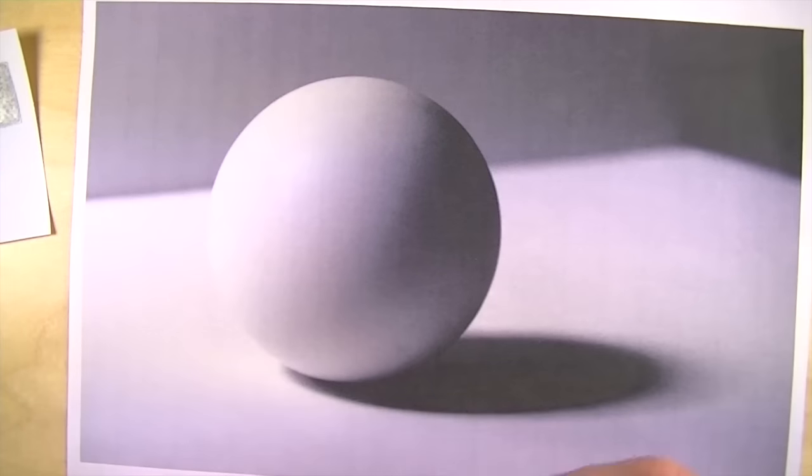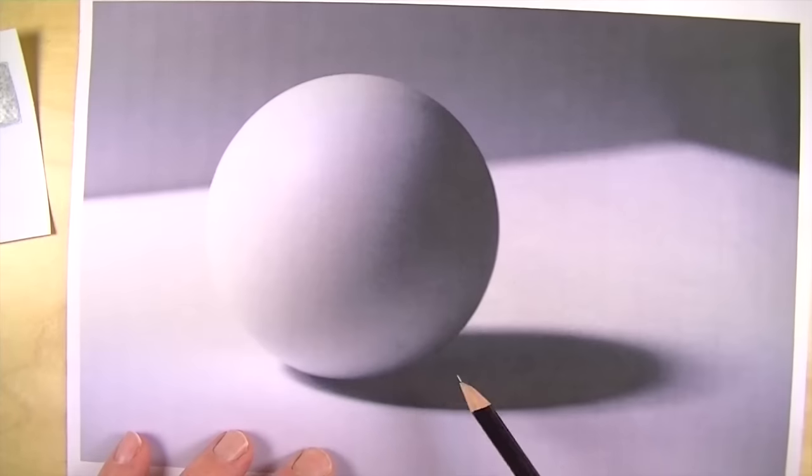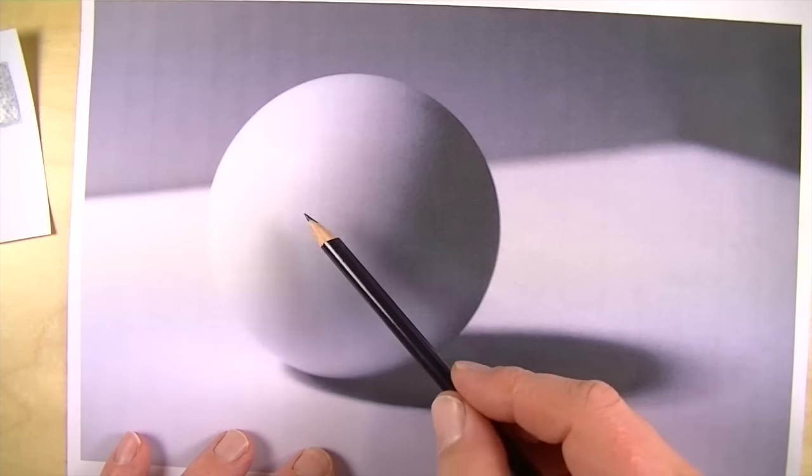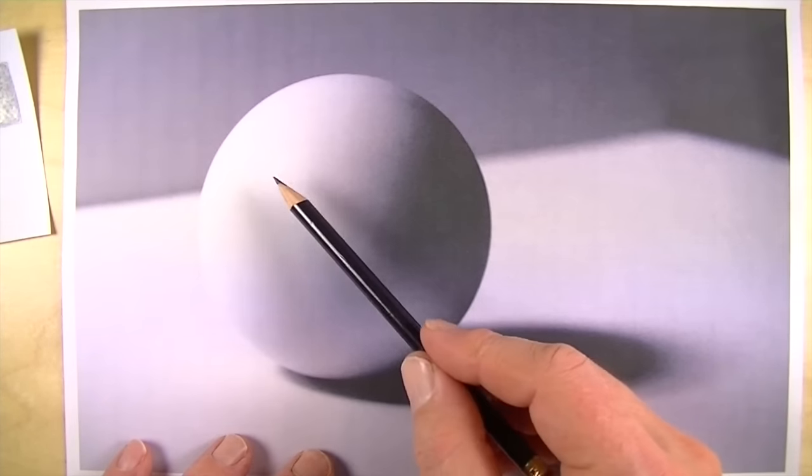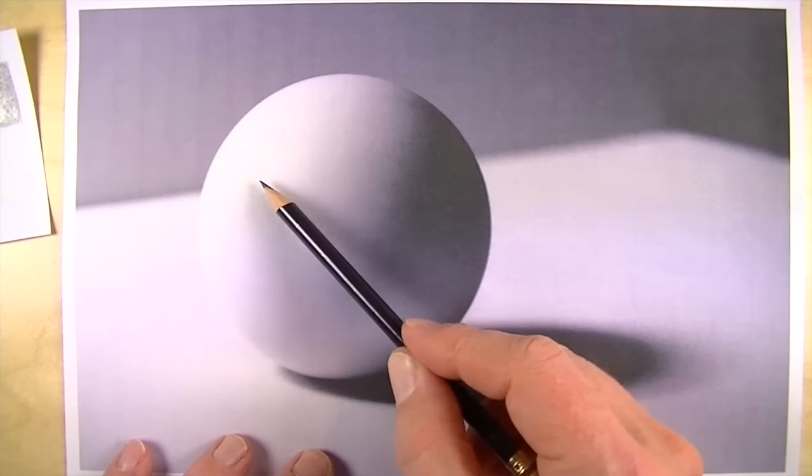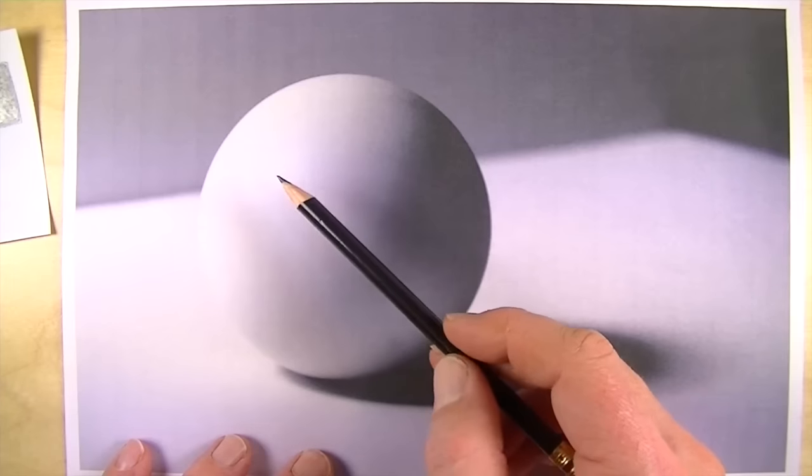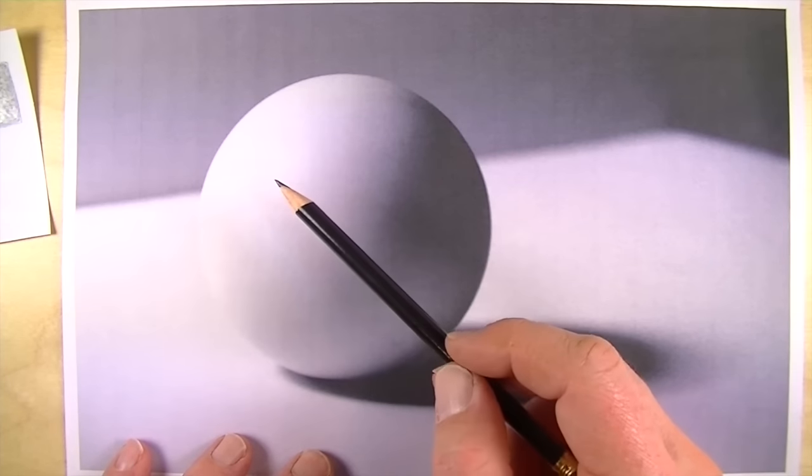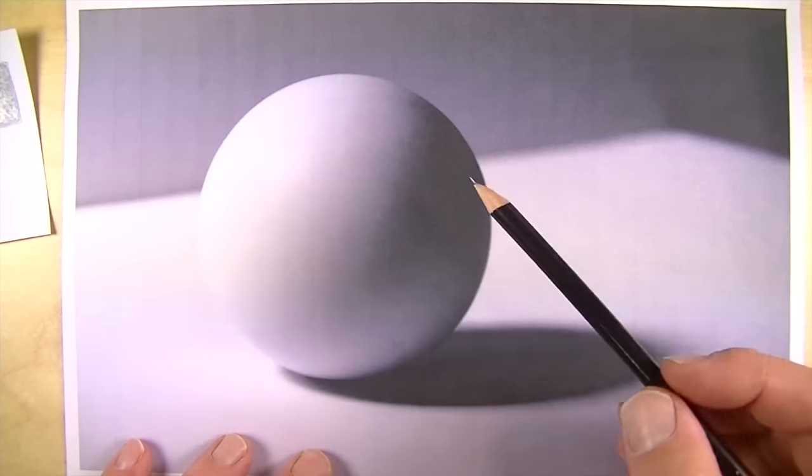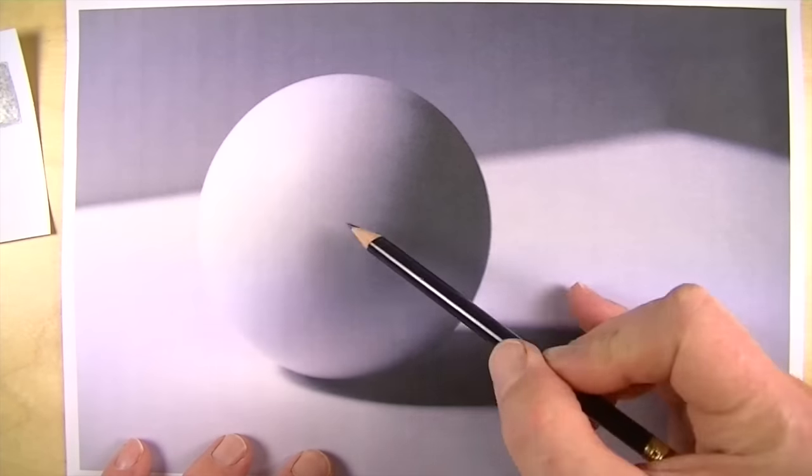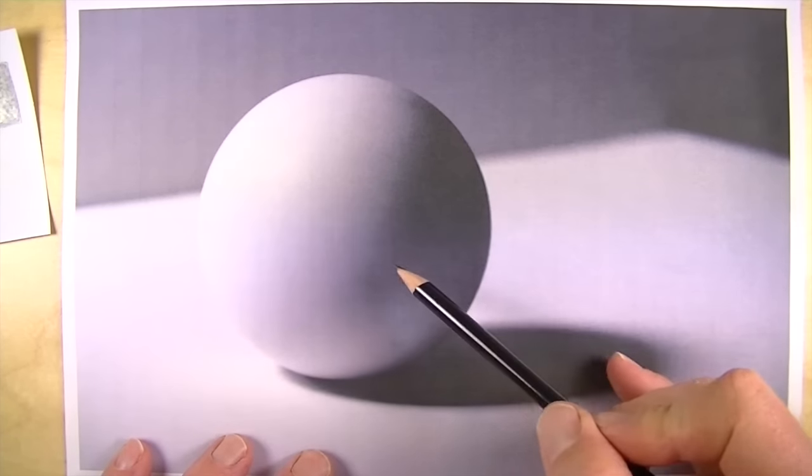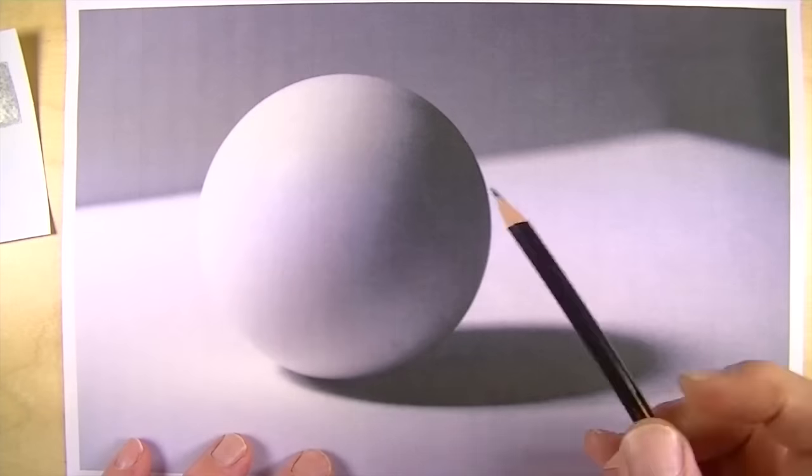A sphere has a full range of value. We can see here clearly we've got the darkest darks and we've got the lightest lights. It may be hard to see here in the video, but there is an area of highlight that is pretty much white. In fact, we're going to try to make it white in our drawing. It's not completely white, but it's white enough to leave white. And then we have that full gradation of value progressively getting darker as we go over to this area.